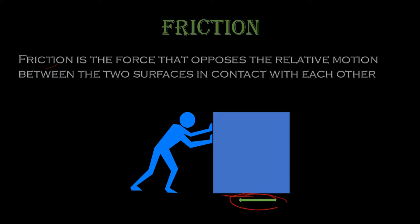Friction is a force that opposes relative motion. So if a person is trying to push the box in one direction, this force will try to oppose it. If the person pushes from the other side, the force is generated in the opposite direction. It basically opposes the motion of that body because of contact between the surface of the box and the surface of the floor.